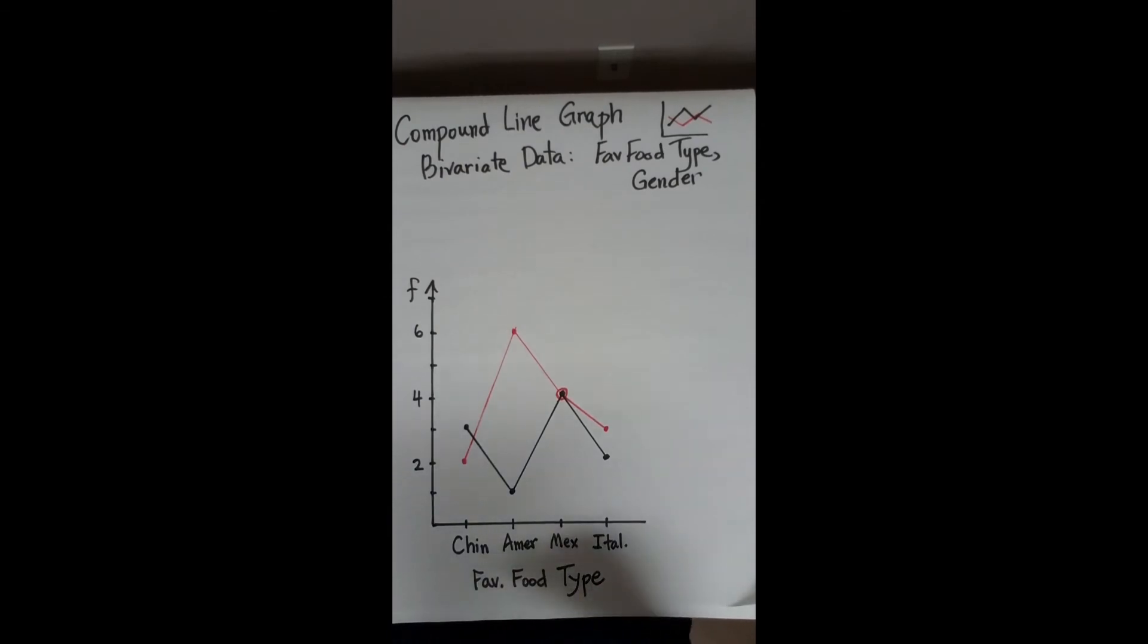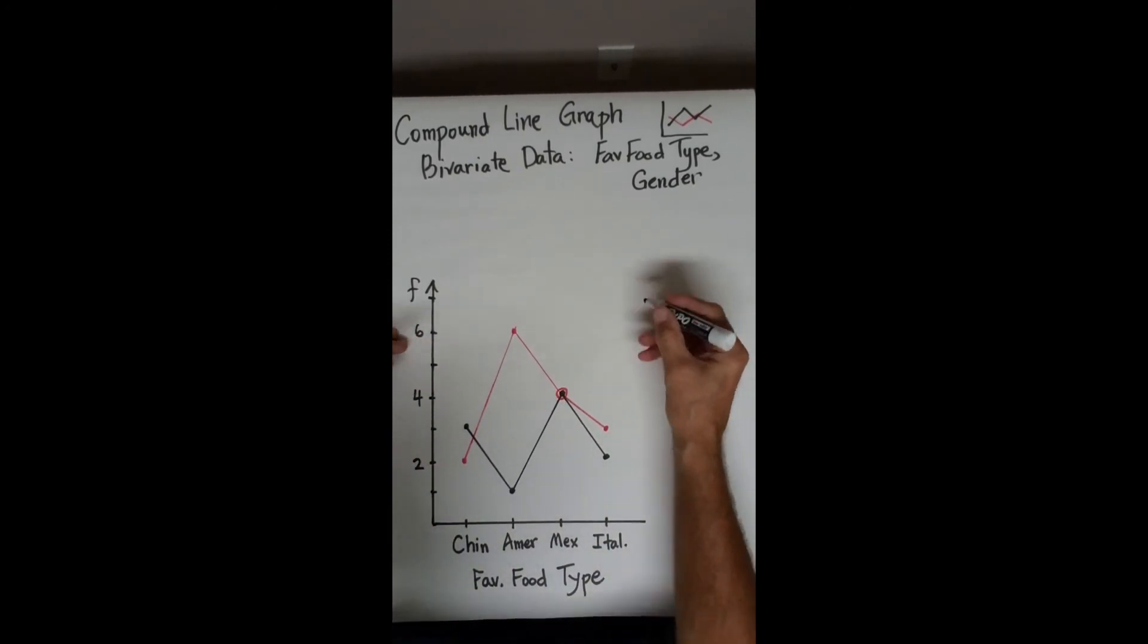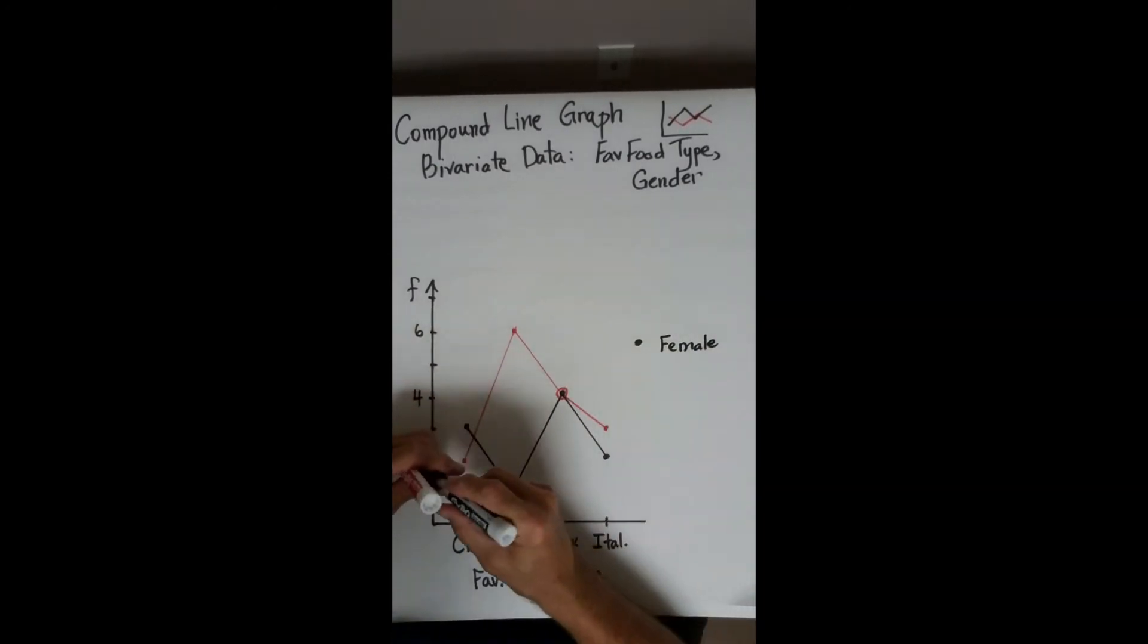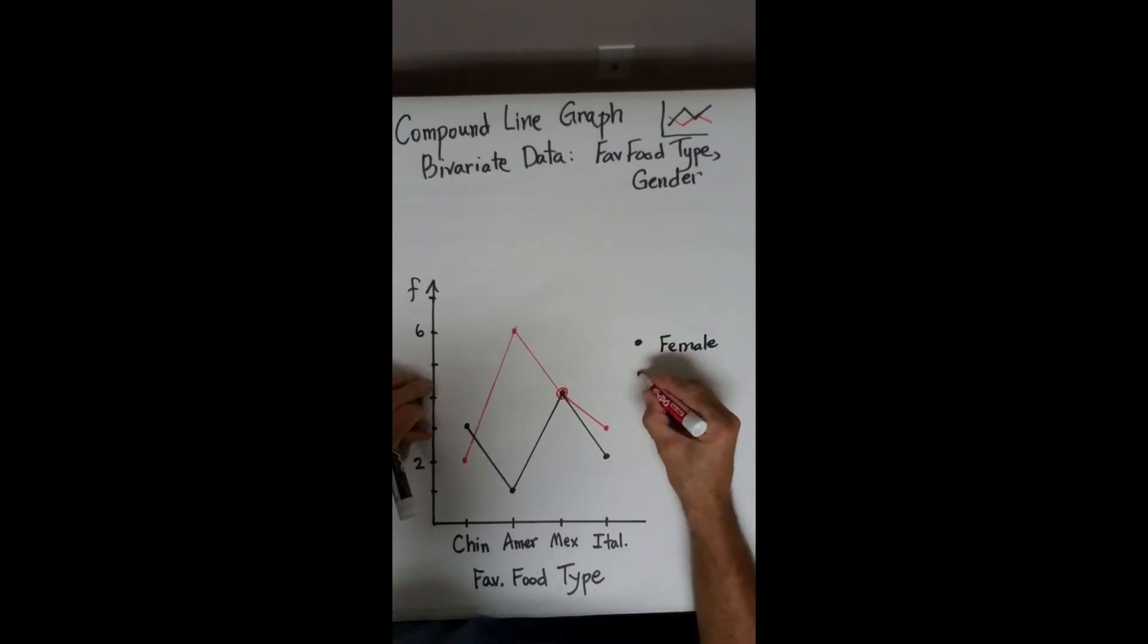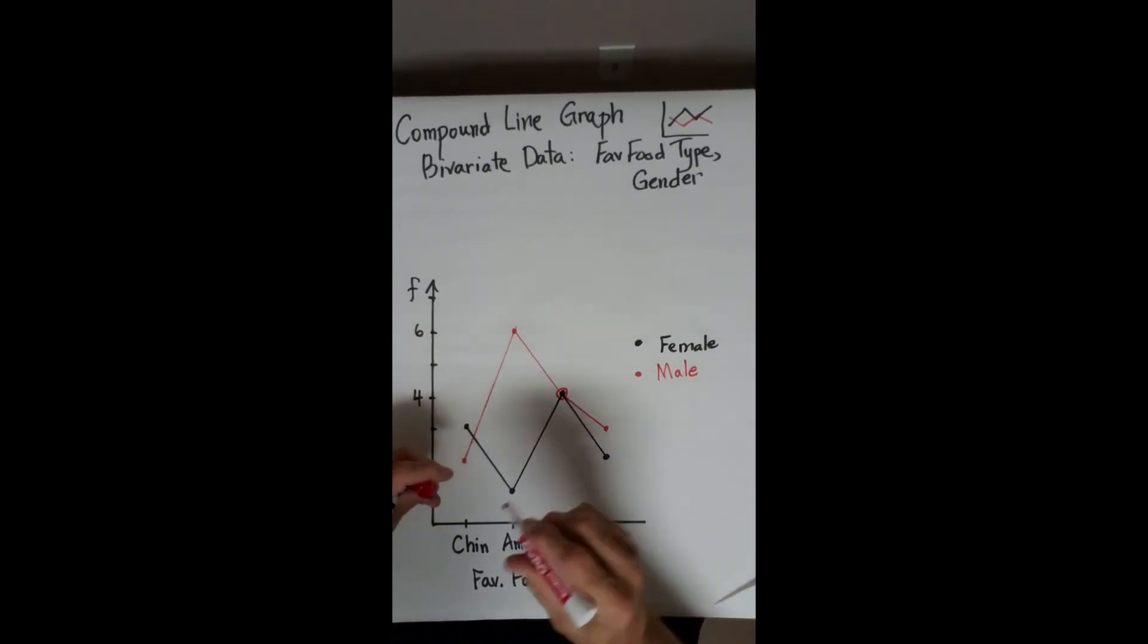What we need now is a key to distinguish between, we know the food types, we need to distinguish between the colors. We'll put black for female and red for male. M-A-L-E.